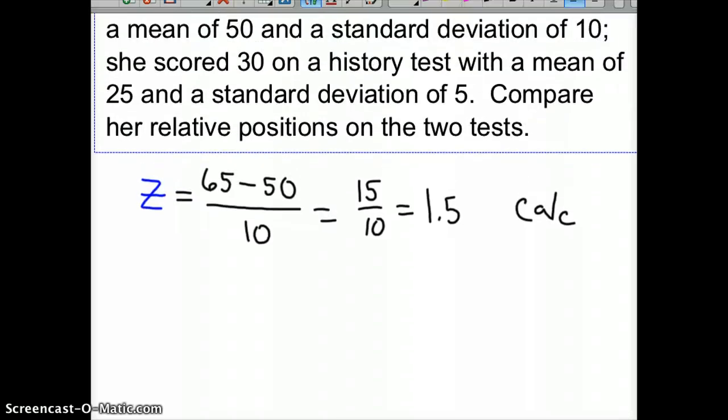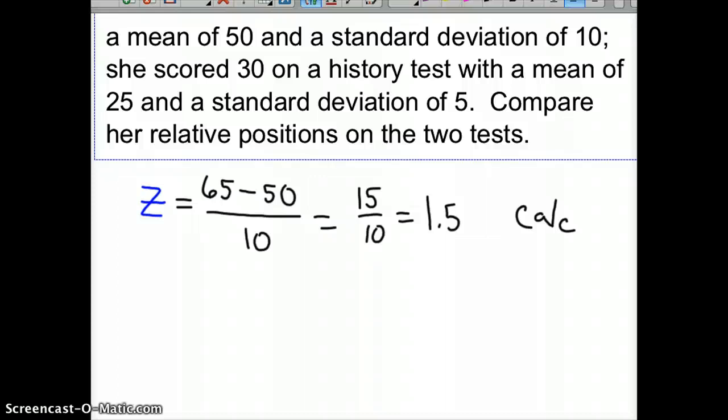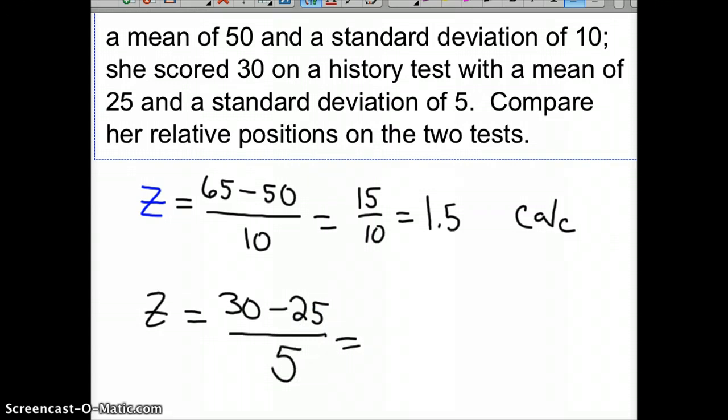She scored a 30. The z-score on the history exam is 30 minus the mean of 25, divided by the standard deviation of 5. Her z-score is 5 over 5, which is 1.